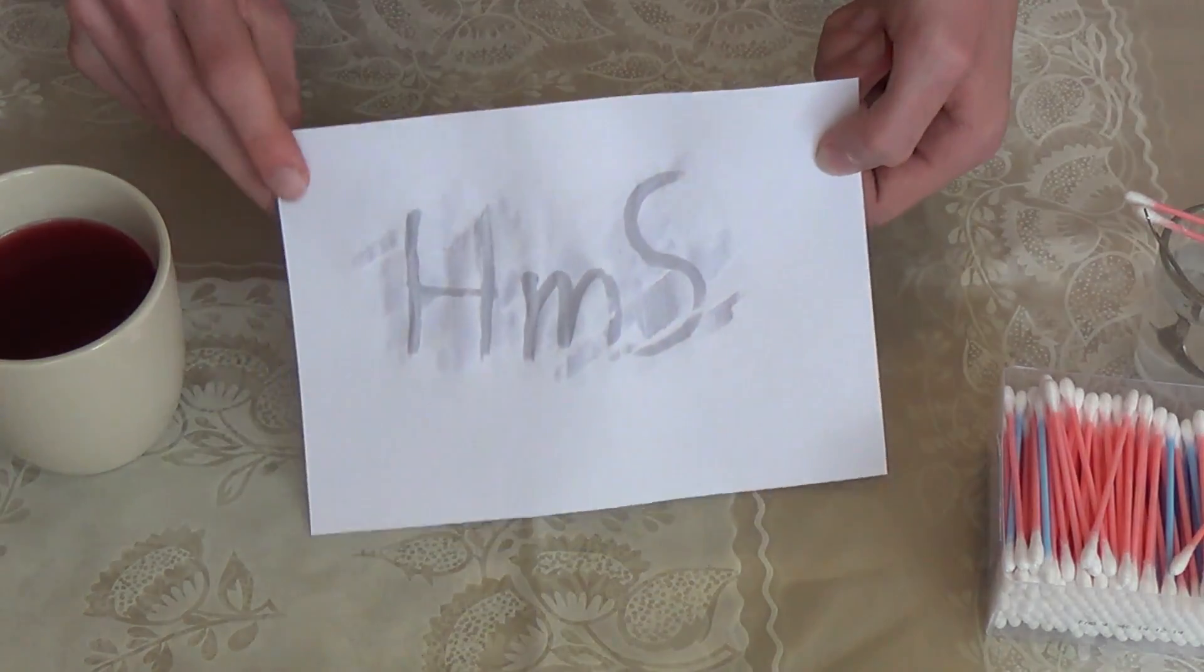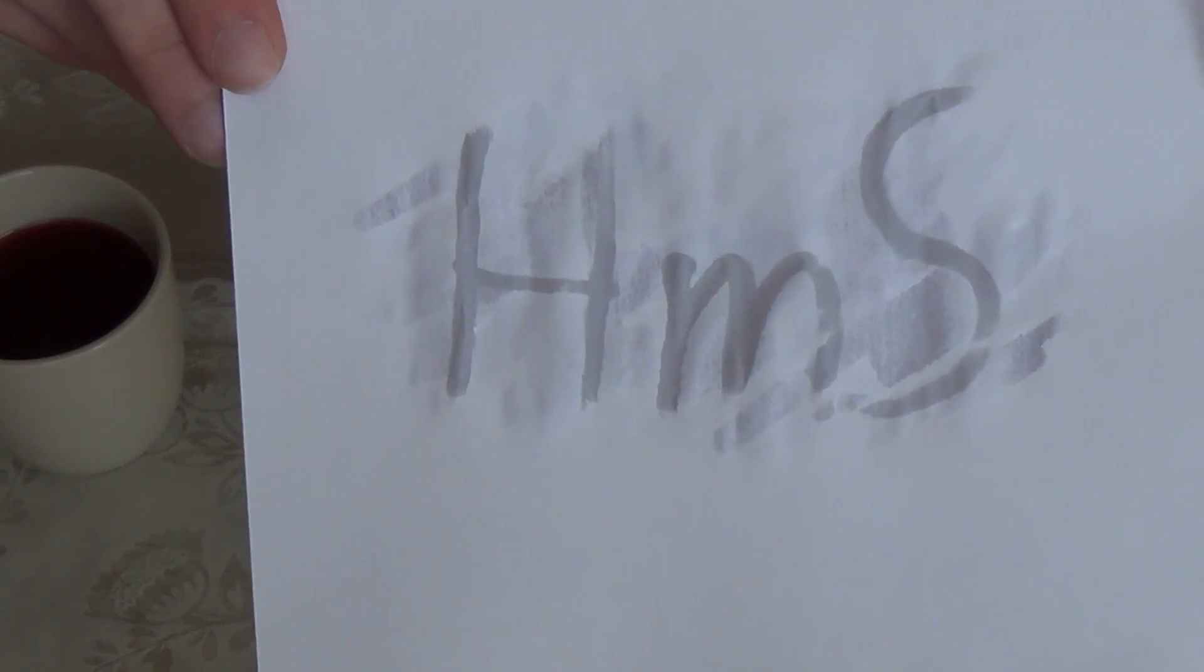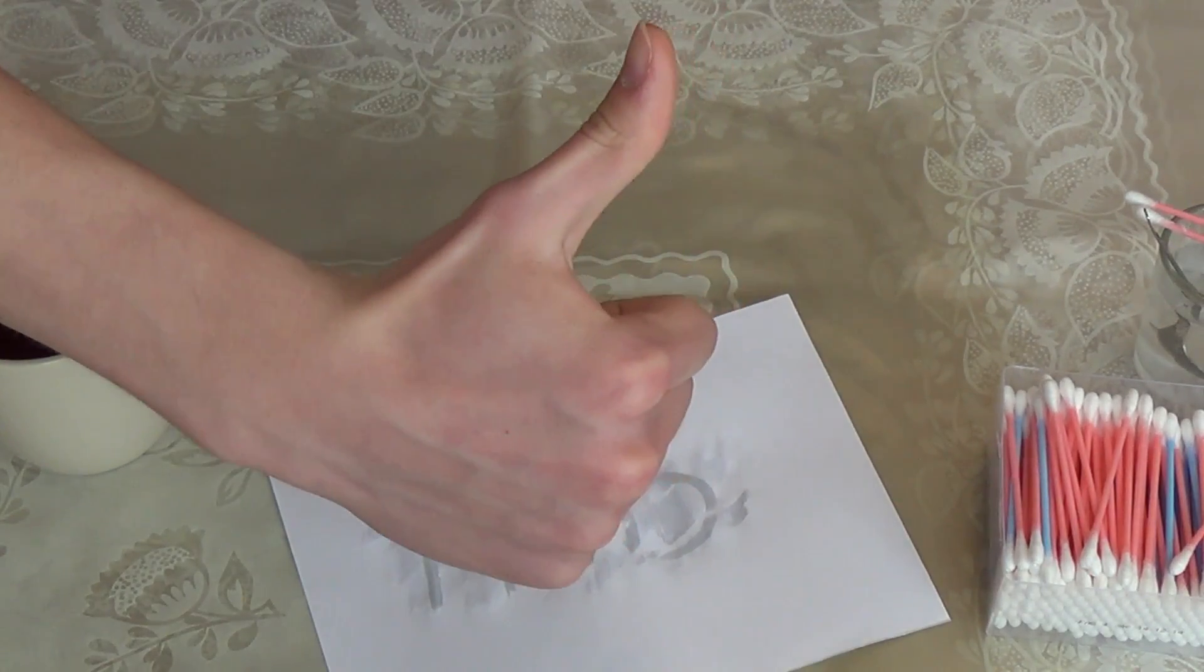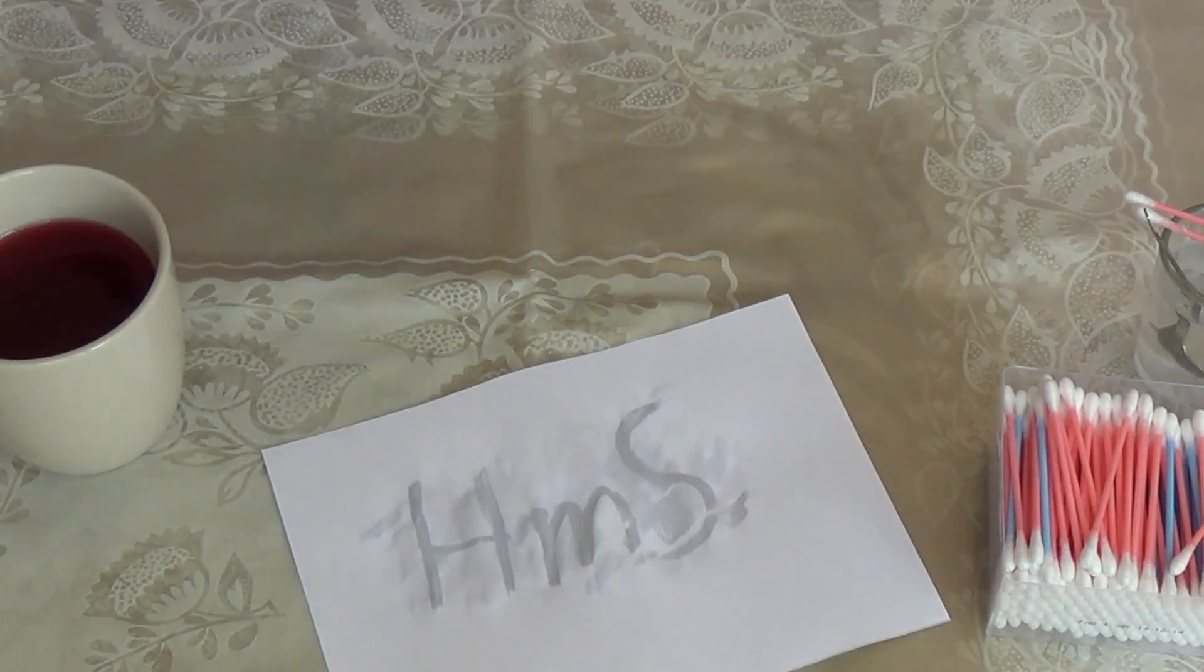So when you paint with the baking soda on the paper, let it dry so you can't see it, and then cover the paper with pH indicator, you're gonna have the image of the thing you've written on the paper.